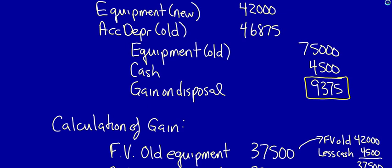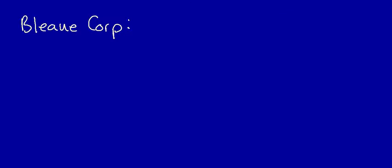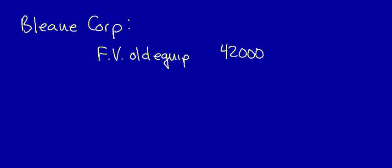Let's now imagine that we work for Blue Corporation and we have to record the non-monetary exchange. First, calculate what they gave up — they gave up the fair value of the old equipment. Notice again that because this exchange had commercial substance, we have to use the fair values and not the carrying values in order to calculate what has been given up.